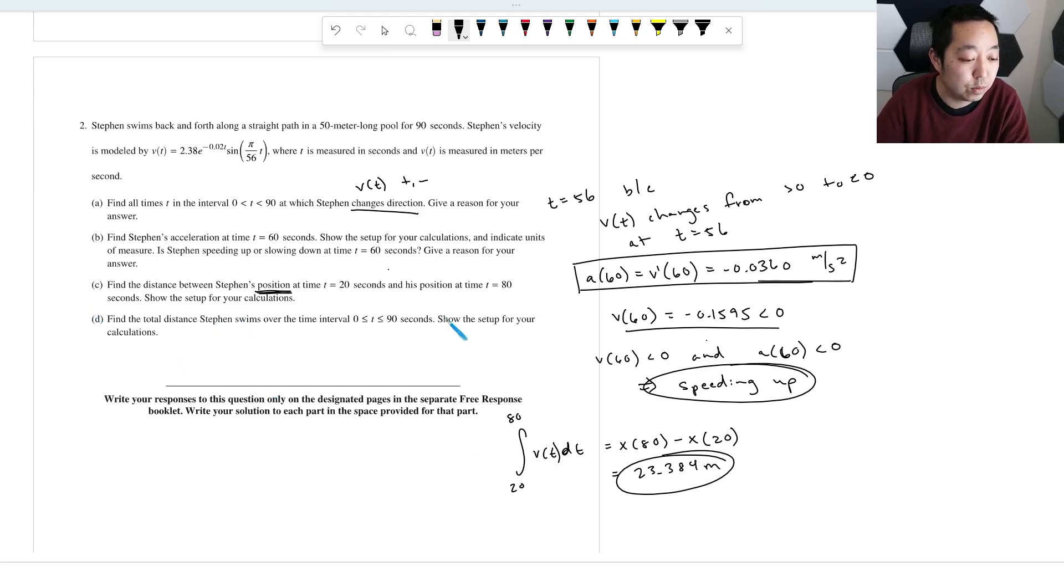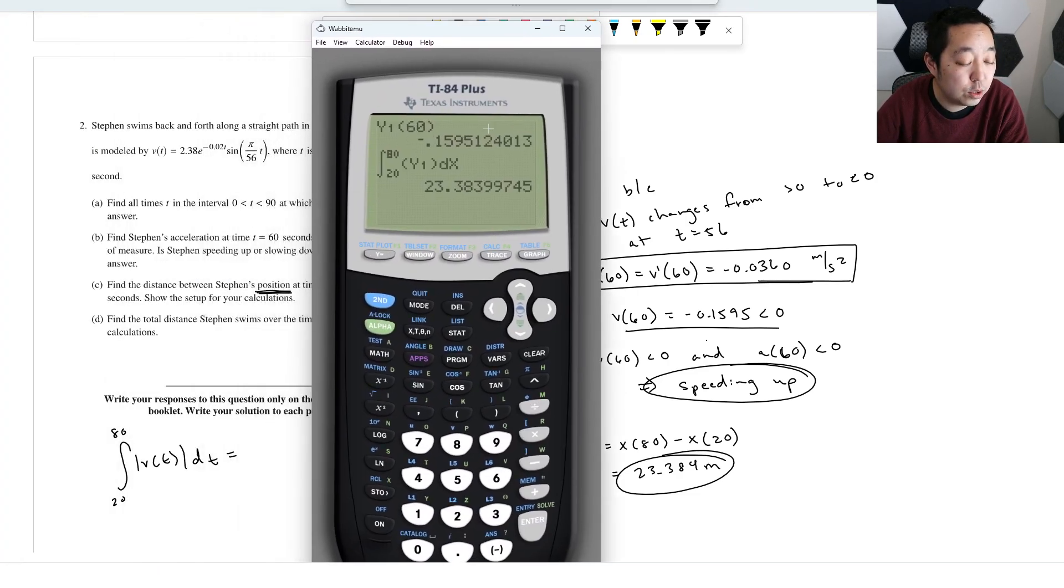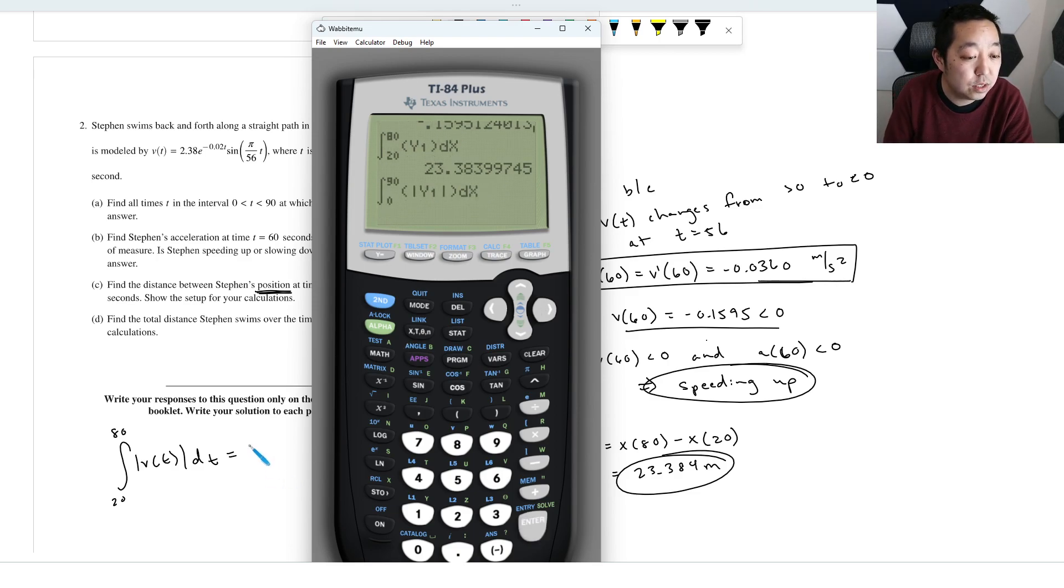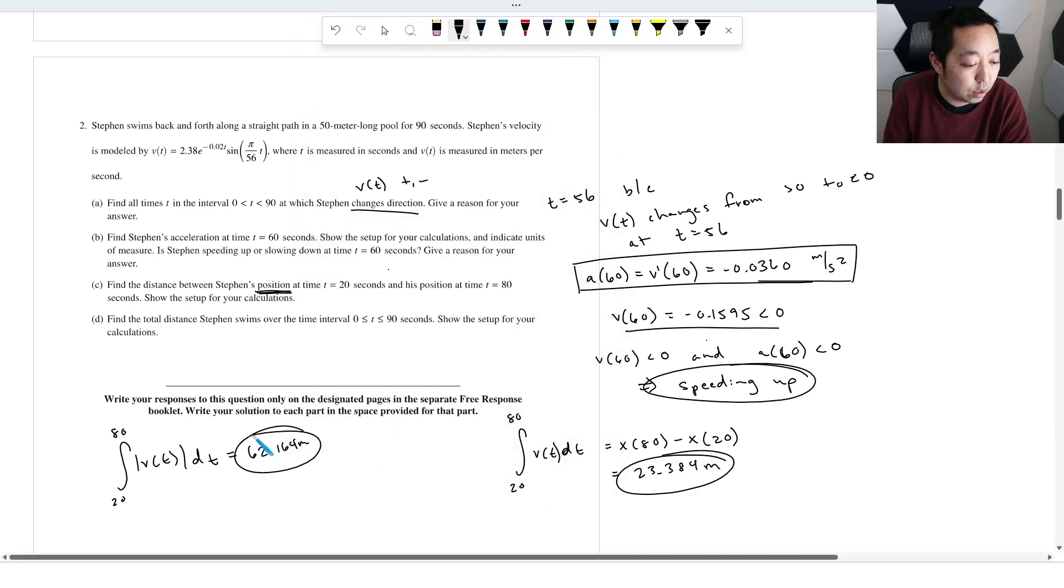Find the total distance he swims from 0 to 90. Show the setup for here. So from 20 to 80, when I want the distance traveled, it's the absolute value of the velocity. So in that instance, we're going to almost do the exact same thing. We're going to go function integral. We're going to go from 0 to 90, but we got to put absolute value in there now. So now we're going to say math, absolute value of y1 for dx. And that's going to give us, it's got to think. Absolute value always takes a little bit longer because it does more calculations and the convergence is a little bit slower. 62.164 meters. And so that will conclude that calculator portion of that. So that looks right. As long as I type that into the calculator, that should be the right process.